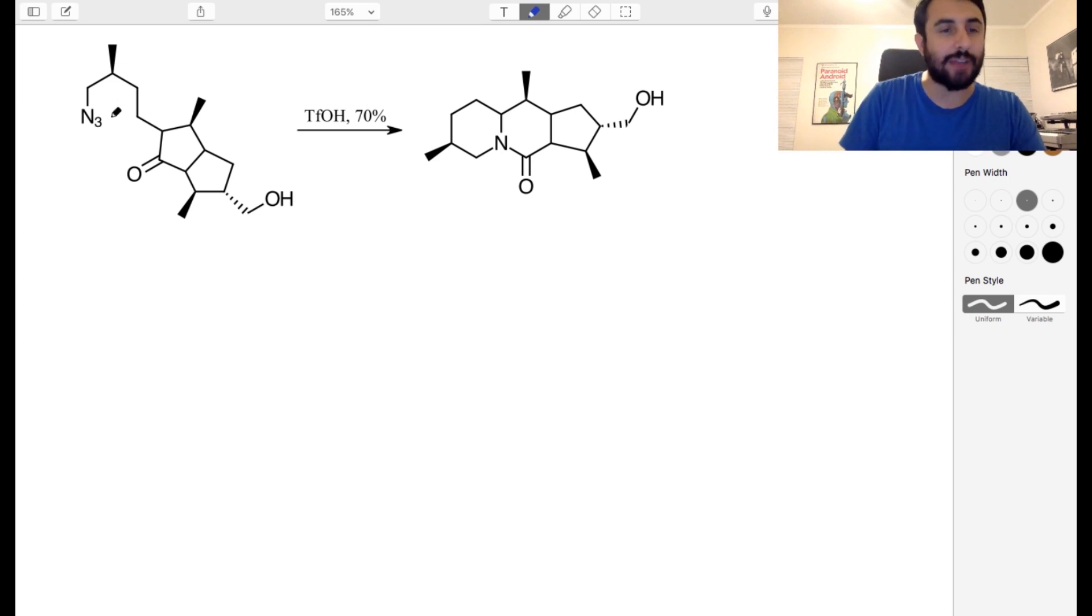So the first thing we have to do is understand exactly what N3 is. So what exactly is N3? We've got N, N, N, like that. And so this one has a minus charge and this one has a plus charge. So that's what this functional group actually is when we see N3.